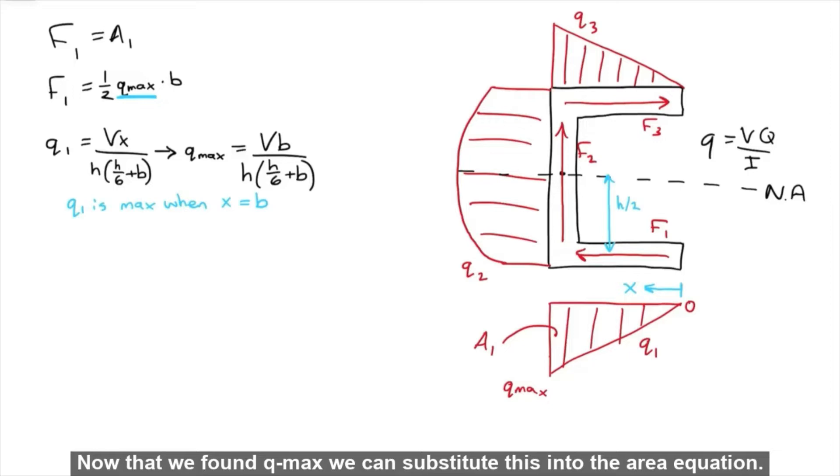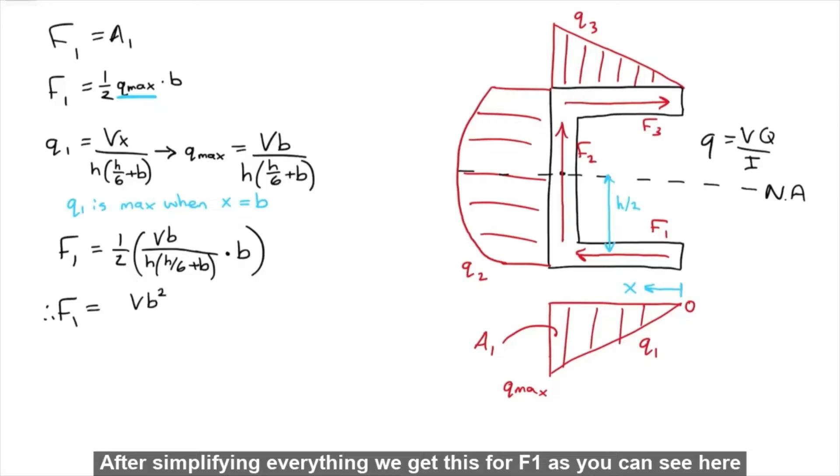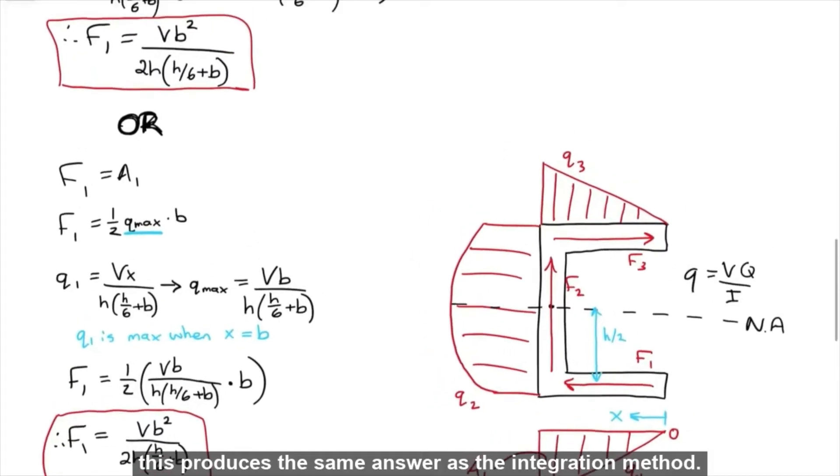Now that we found Q max, we can substitute this into the area equation. After simplifying everything, we get this for F1. As you can see here, this produces the same answer as the integration method.